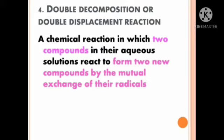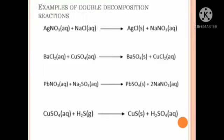A chemical reaction in which two compounds in their aqueous solution react to form two new compounds by the mutual exchange of their radicals is called a double decomposition reaction. For example, silver nitrate reacts with sodium chloride to give silver chloride and sodium nitrate (NaNO3). Also, barium chloride reacts with copper sulfate to give barium sulfate and copper chloride.